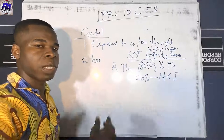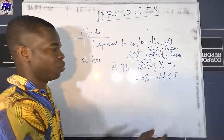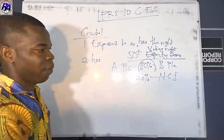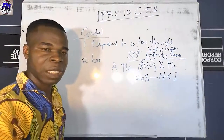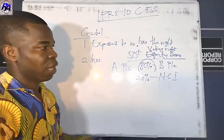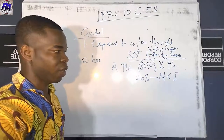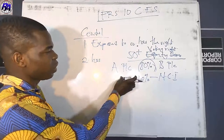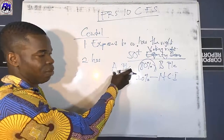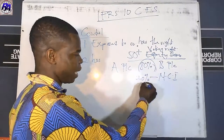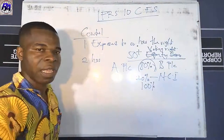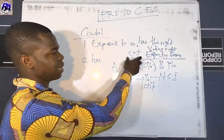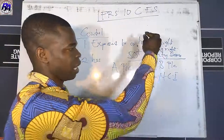NCI is the equity interest in the subsidiary that is not directly or indirectly attributable to the parent. There are two ways of measuring NCI: either the fair value method or the proportionate share method. If a parent acquires 100% of the equity shares of another entity, NCI holdings will be zero. Control exists when an entity acquires 50% plus of equity shares or voting rights.